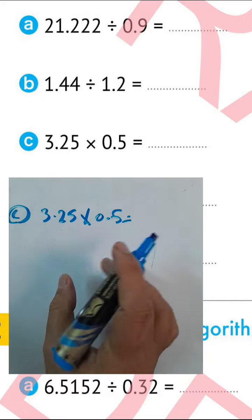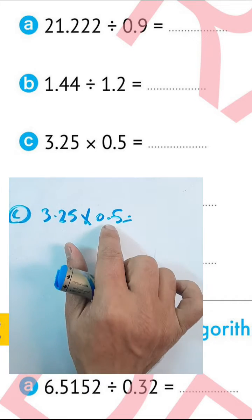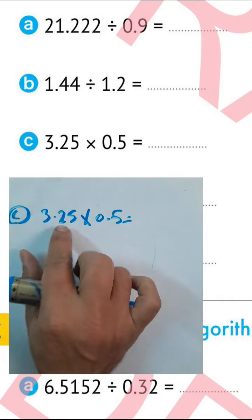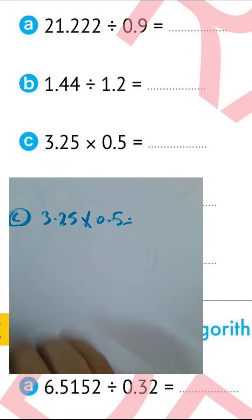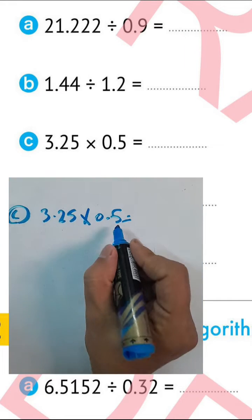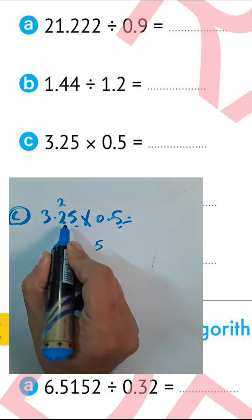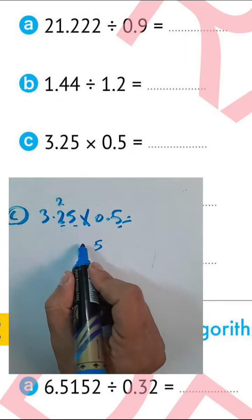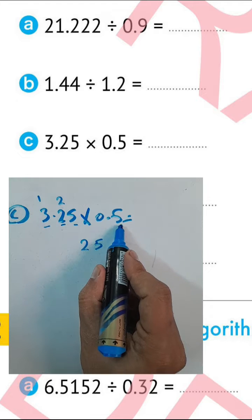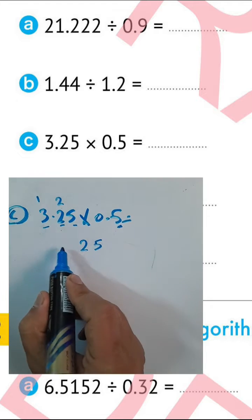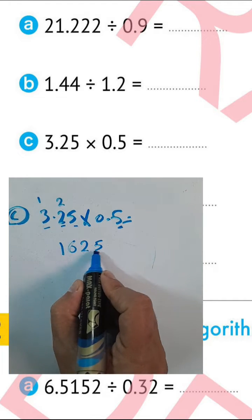Question letter C: 3.25 times 0.5. Find the result and then put the point after three places, because the point here is after one place and here after two places, so in the result you must put the point after three places. 5 times 5 equals 25, write 5 and carry 2. 2 times 5 equals 10, plus 2 equals 12, write 2 and carry 1. 3 times 5 equals 15, plus 1 equals 16. Then place the point after three places: the result is 1.625.